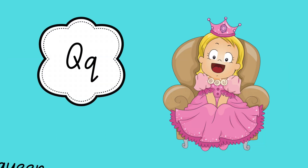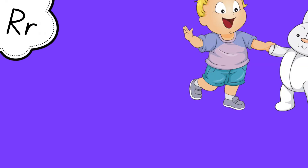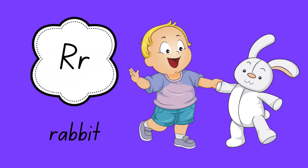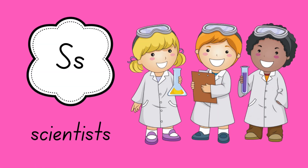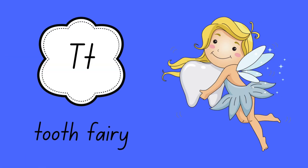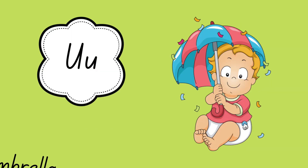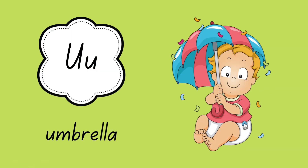Q is for queen. R is for rabbit. S is for scientists. T is for tooth fairy. U is for umbrella.